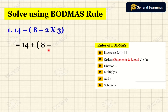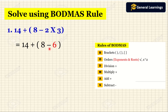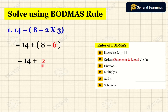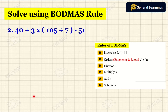We write 14 plus as it is, then inside the bracket 8 minus, then 2 into 3 equals 6. Now inside the bracket there is only one operation, minus, so 8 minus 6 is 2. Now we have only one operation, plus, so 14 plus 2 equals 16. When we solve this equation we get the answer as 16.